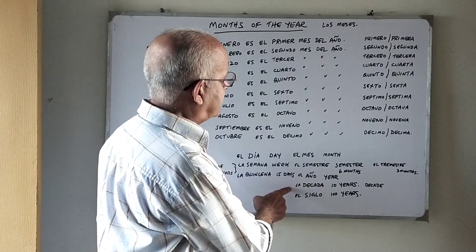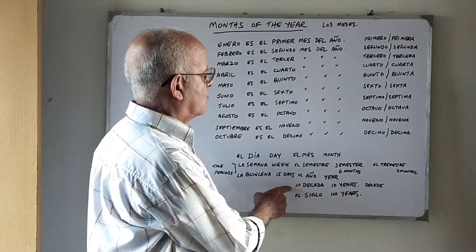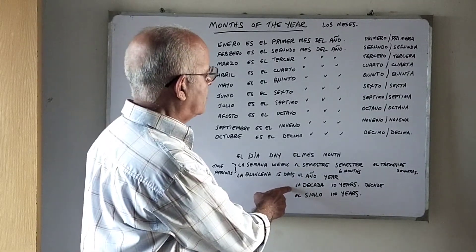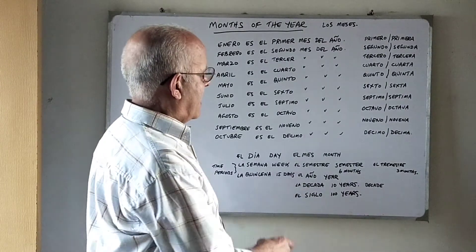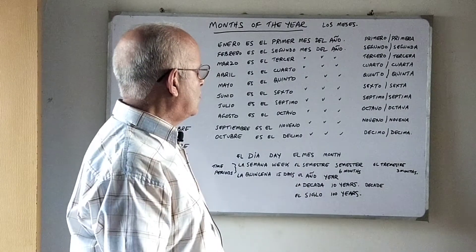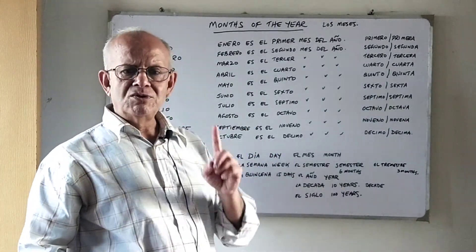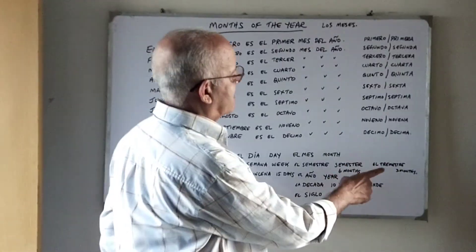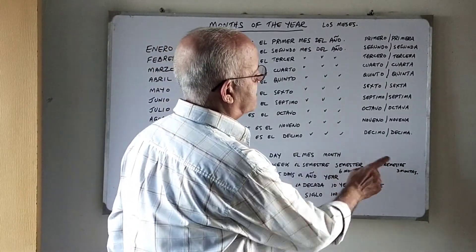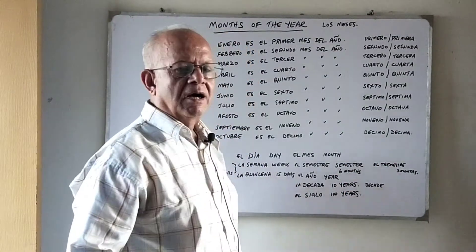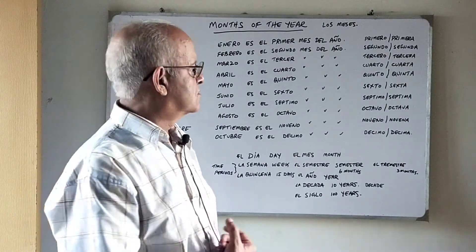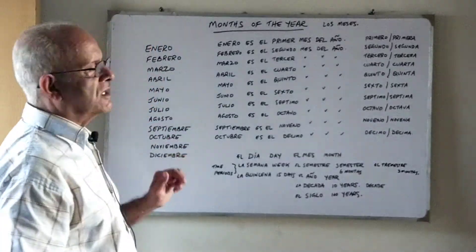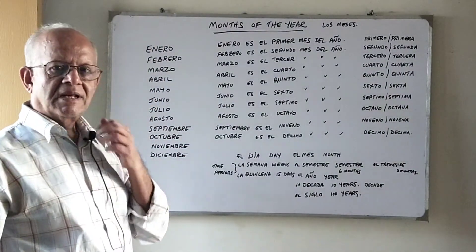La década — a decade, ten years. El siglo — un siglo — a hundred years. El trimestre — quarter of a year or three months. So this was our short class of today.